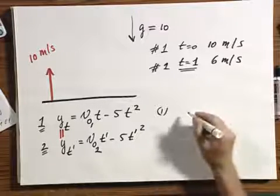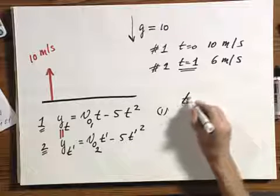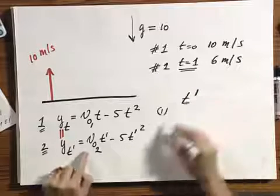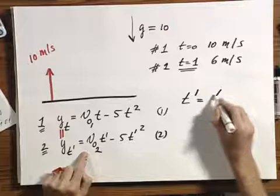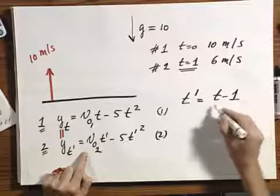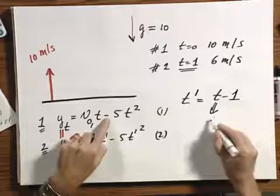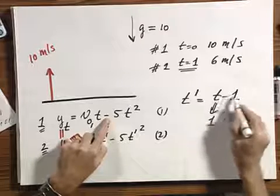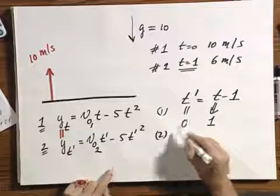Now comes the key thing that you have to recognize. You have to substitute in this equation number two, that t prime equals t minus one. And notice, when t in this equation is number one, one minus one is zero, that t prime is zero.